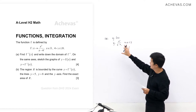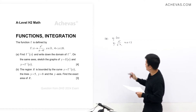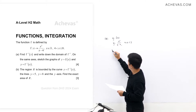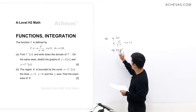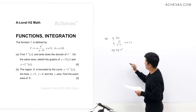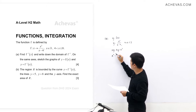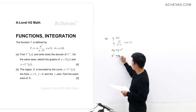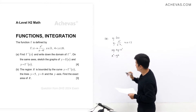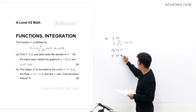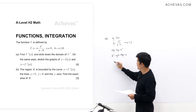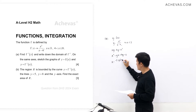Let's work on this. First, we are going to make x the subject. Cross-multiplying, we have xy - 4y = x². Bringing terms over to the right-hand side, we have x² - xy + 4y = 0. I want to see this as a quadratic equation in terms of x, so minus y becomes the coefficient.